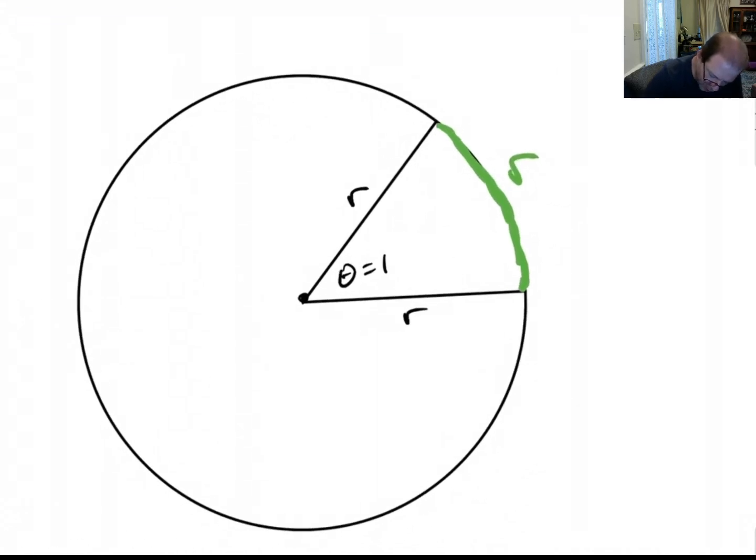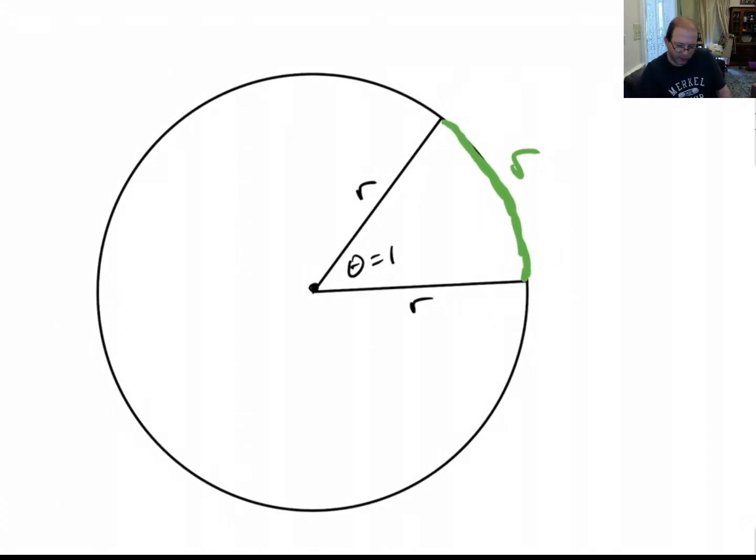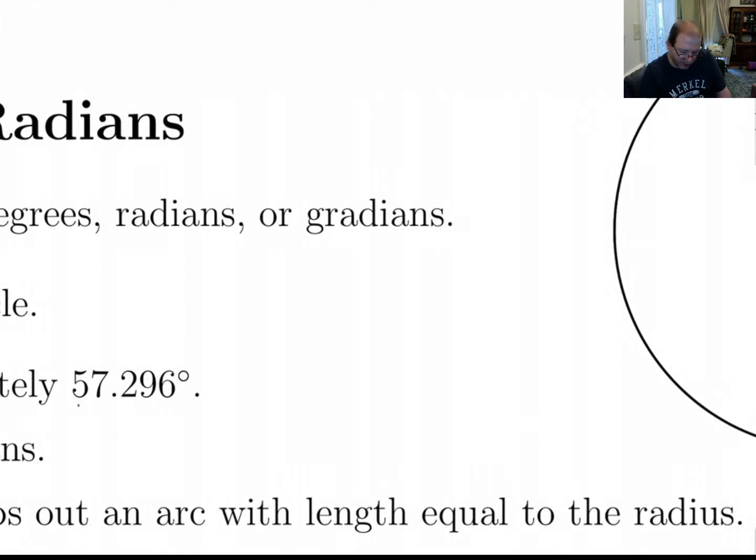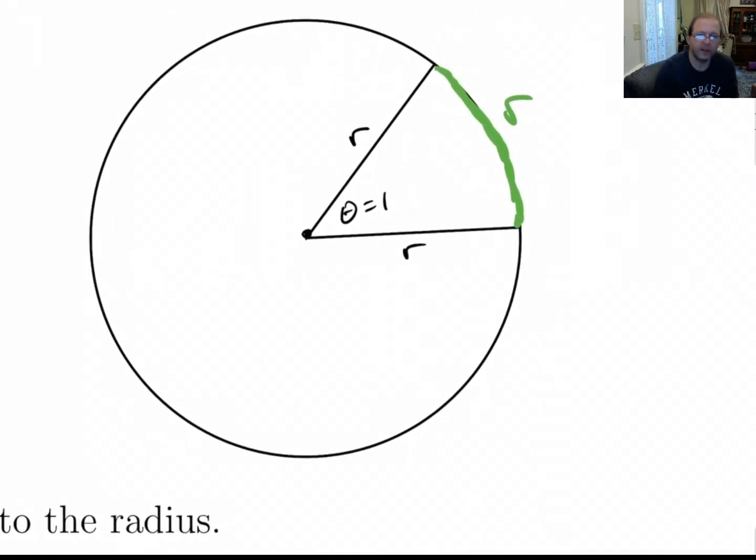Now one interesting thing, we can look at this and convince ourselves that this is correct, or at least that it seems like it could be correct. If you look at this, if I connect that point to this point with a line, we get a triangle. And it's kind of close to being an equilateral triangle, but it's not quite. The reason is, if you go from this point to this point along this arc, that's a length of r. So this length right here is a little bit less than r.